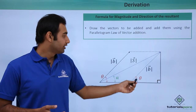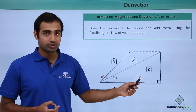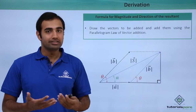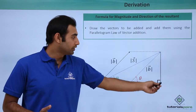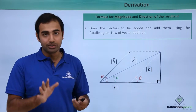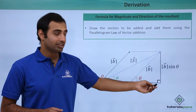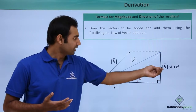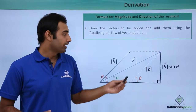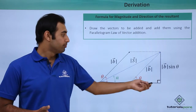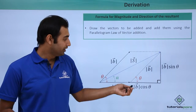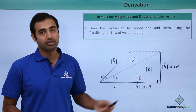In this right-angle triangle, I apply the formula for sin theta to calculate the perpendicular side. Sin theta equals perpendicular upon hypotenuse, so the perpendicular is hypotenuse times sin theta — that is, the modulus of b times sin theta. Similarly, applying cos theta for the base: cos theta equals base upon hypotenuse, so the base is the modulus of b times cos theta.